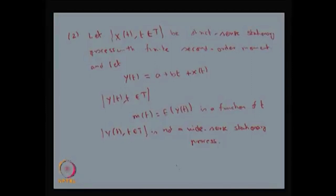We started with the strict sense stationary process and created the new stochastic process y(t) = a + bt + x(t), where a and b are constants. If you find out the mean function of y(t), it is a function of t — it depends on t — therefore y(t) is not going to be a wide sense stationary process, whereas x(t) is a strict sense stationary process.